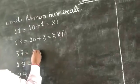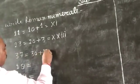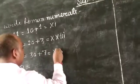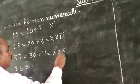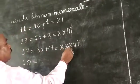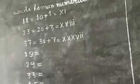37 equals 30 plus 7. 30 is XXX and 7 is VII, so XXXVII.